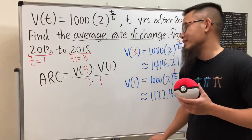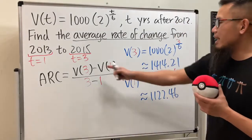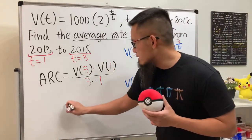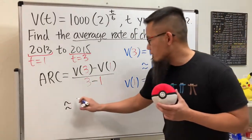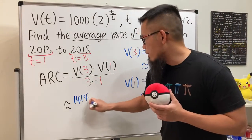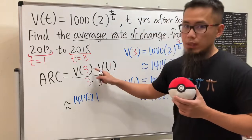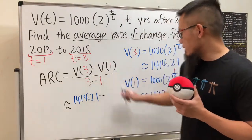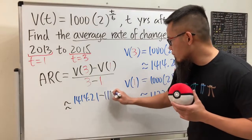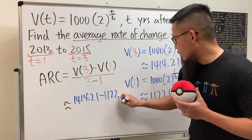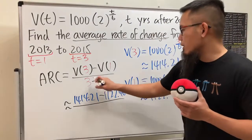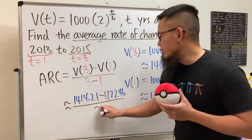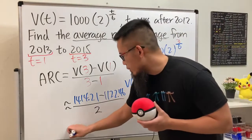Okay good, now we can just enter this and that in here and here. So we are looking at V(3), which is 1414.21, and then we are going to minus V(1), which is 1122.46, and divided by, well, 3 minus 1 is of course just 2. And now just work this on your calculator and you will get approximately...